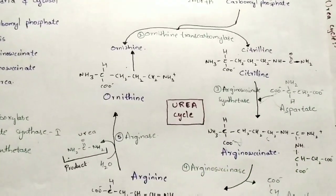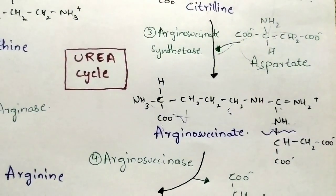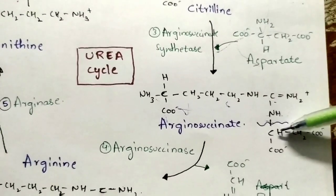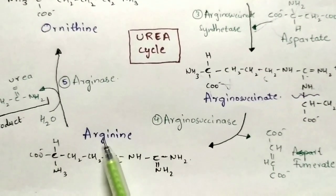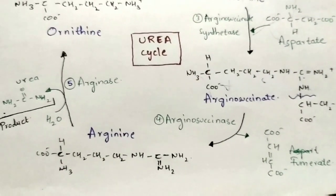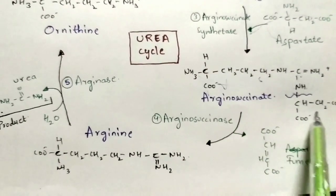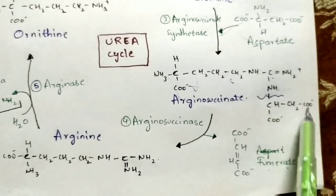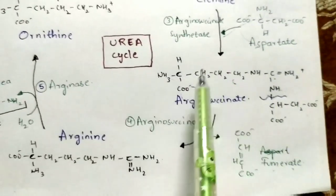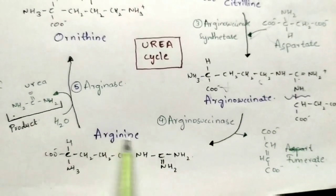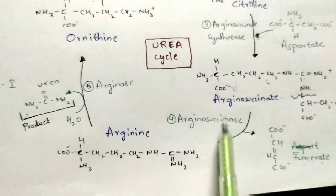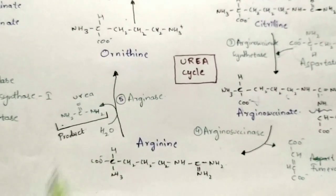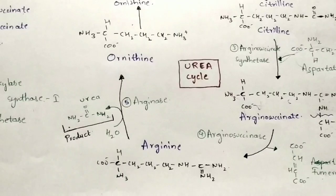The fourth step is cleavage of arginosuccinate. Cleavage of the bond in arginosuccinate leads to the formation of arginine. The lower part is liberated out as fumarate, and the remaining part forms arginine, utilizing the enzyme arginosuccinase.